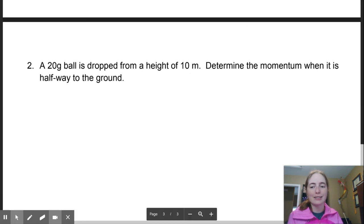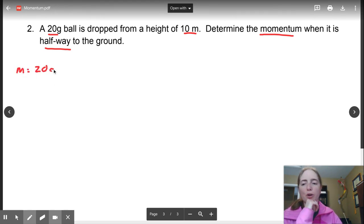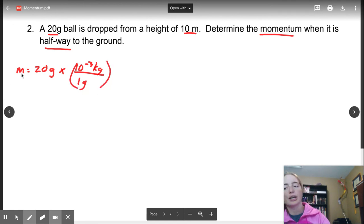So ladies and gentlemen, let us do another question here. A 20 gram ball is dropped from a height of 10 meters. Determine the momentum when it is halfway to the ground. This is kind of an interesting question. Let's start out by listing what we got. We have a mass of 20 grams. Can we use 20 grams? No, we got to use kilograms. So we're going to multiply this by 10 to the negative 3 kilograms per gram and get a mass of 0.02 kilograms. You have to use the right units.